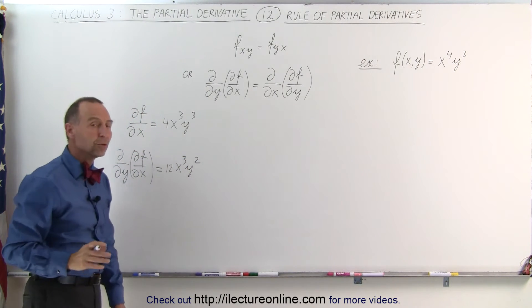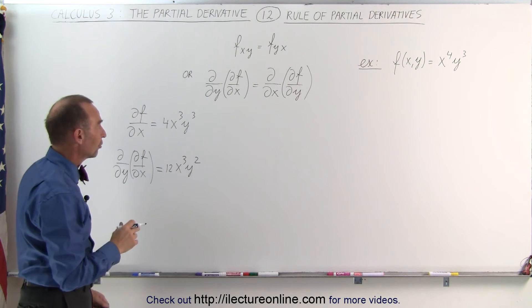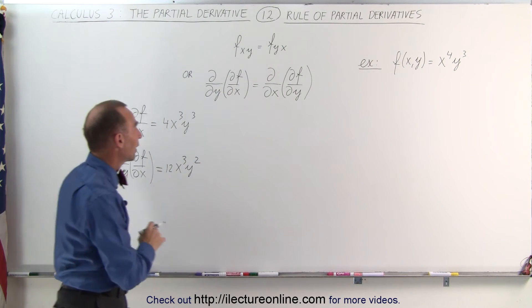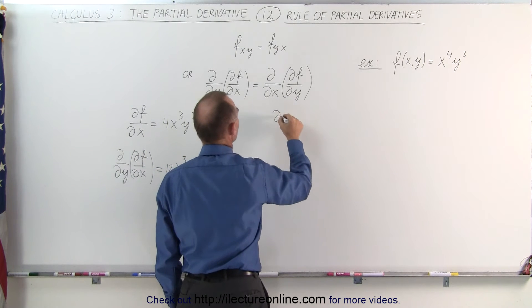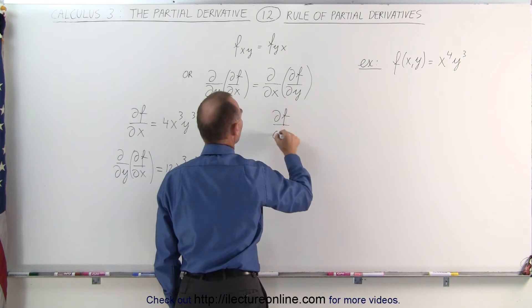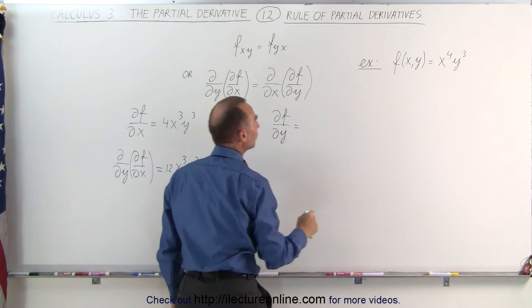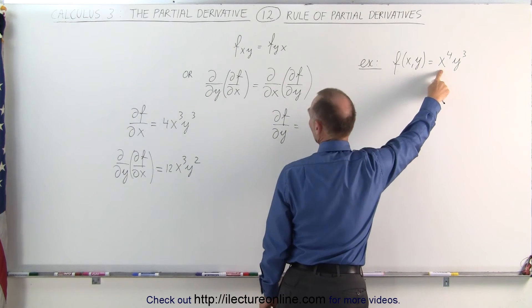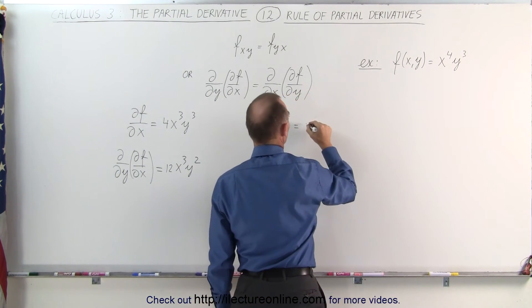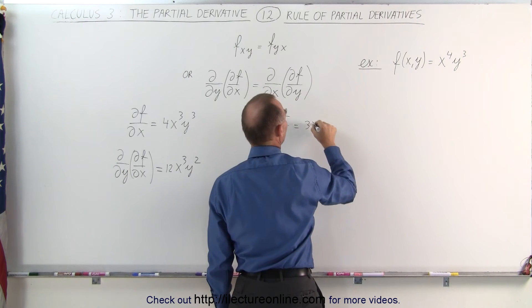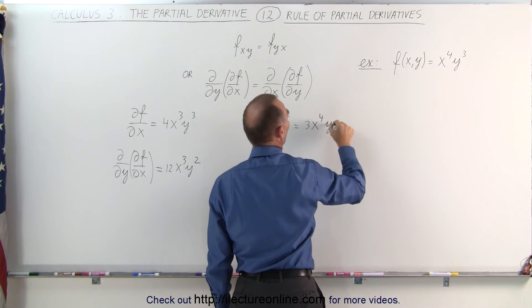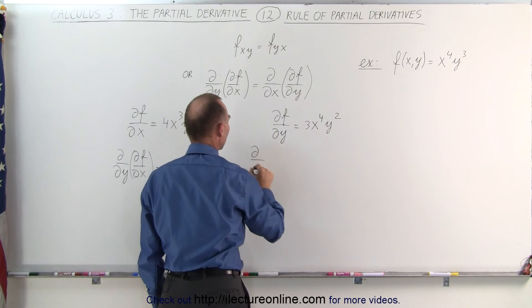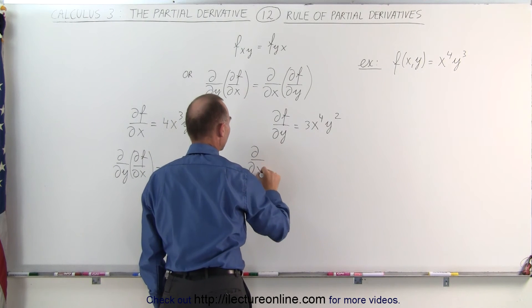Now we're going to do the same thing but in reverse. We're first going to take the partial derivative of the function with respect to y. The partial derivative of f with respect to y — now notice x becomes the constant — so this will now be 3 times x to the 4th power times y to the 2nd power. Now we take the derivative of that with respect to x.